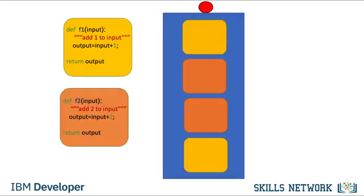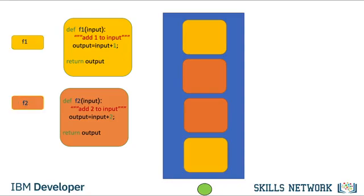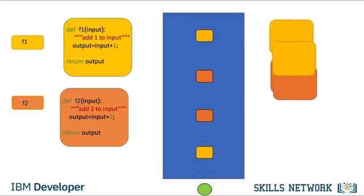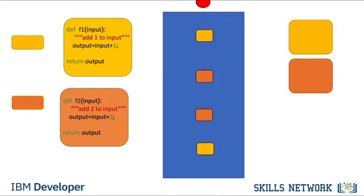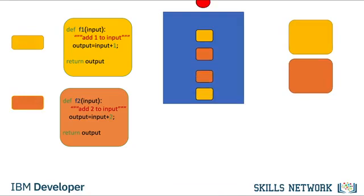Let the orange and yellow squares represent similar blocks of code. We can run the code using some input and get an output. If we define a function to do the task, we just have to call the function. Let the small squares represent the lines of code used to call the function. We can replace these long lines of code by just calling the function a few times. Now our code is much shorter, but the code performs the same task.